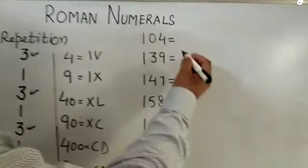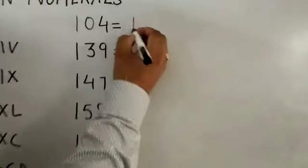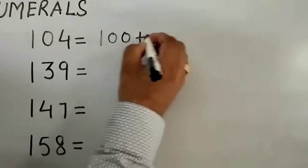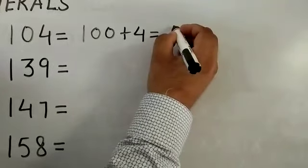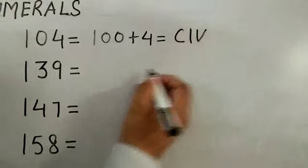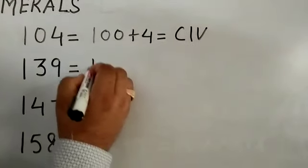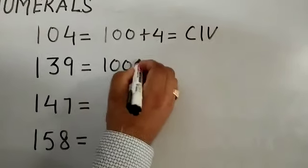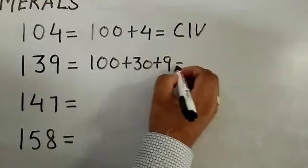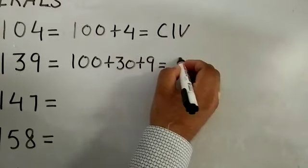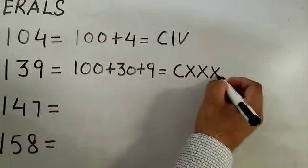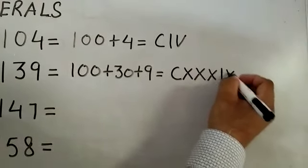104. First, expand your number. 100 plus 4. In Roman, 100 stands for C and 4 is IV. 139: 100 plus 30 plus 9. 100 is C, 30 is XXX, and 9 is IX.